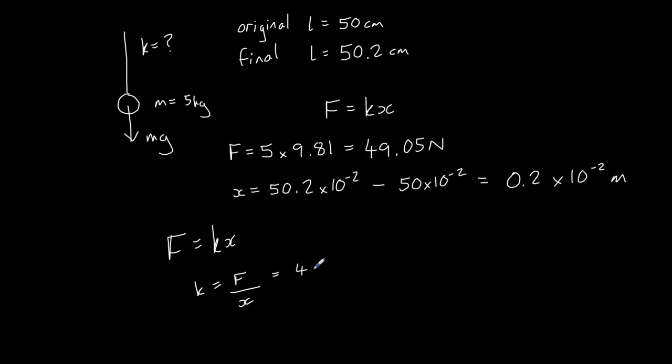So, that's 49.05 divided by 0.2 times 10 to the minus 2, giving us an answer of 2.45 times 10 to the power of 4. And the SI unit for the force constant is the newton per meter.